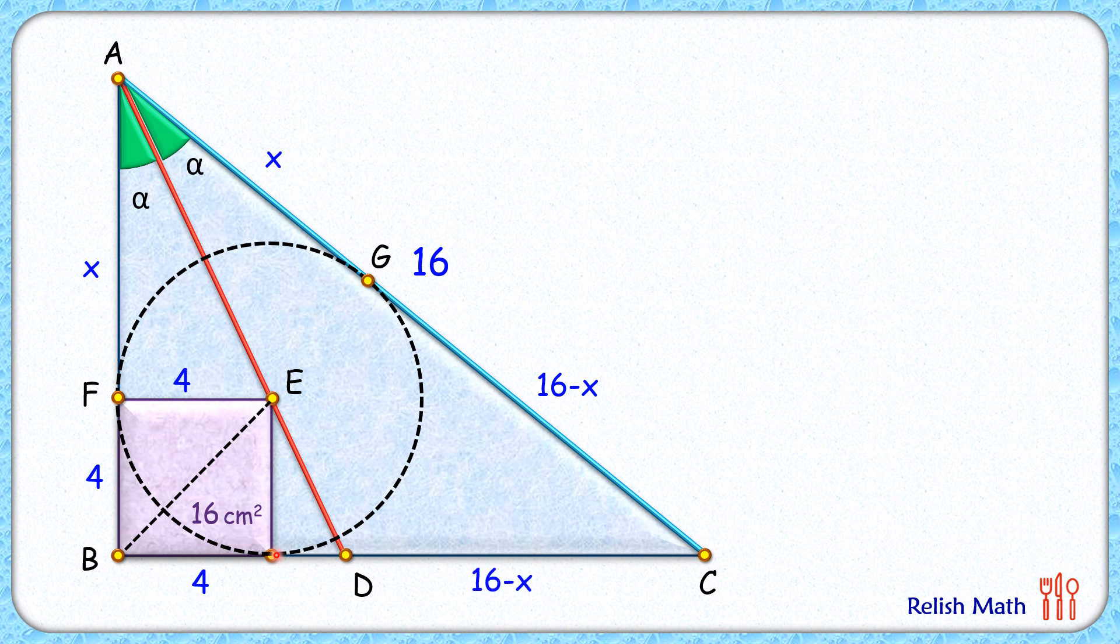And if we check the perimeter of this triangle, then perimeter of the triangle will be x plus 4 plus 4 plus 16 minus x plus CA which is 16. Solving it, x will get cancelled and we'll get perimeter as 40 centimeters and semi-perimeter as 20 centimeters.